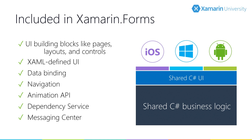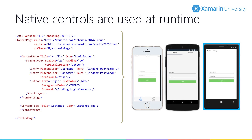Xamarin Forms also includes a number of really useful APIs to help with navigation, animation, and dependency injection. The Xamarin Forms controls are abstract models — for each Xamarin Forms control in your UI, a platform-specific control is created. For example, in our Xamarin Forms XAML we might use an Entry control. When we run this app on iOS, the Xamarin Forms infrastructure will create a native UITextField. On Android, the user will see an Android EditText, and on Windows, they will be presented with a TextBox.